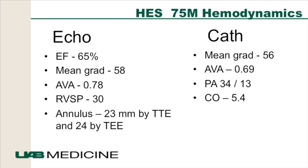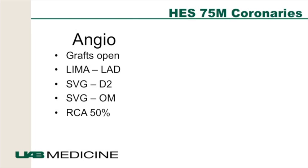His annulus by TTE is 23 mm and 24 mm by TEE. Cath hemodynamics showed similar gradients, with a mean gradient of 56 mmHg, valve area of 0.69 cm², and cardiac output of 5.4. On coronary angiography, he had patent grafts: a LIMA to the LAD, vein graft to D2, vein graft to OM, and a diffuse 50% RCA lesion.